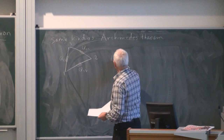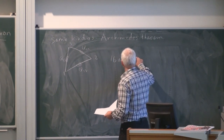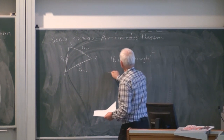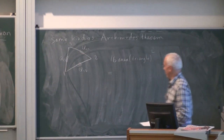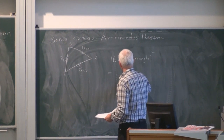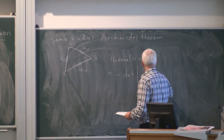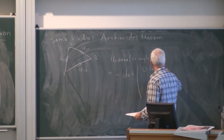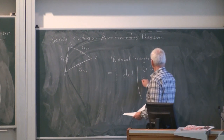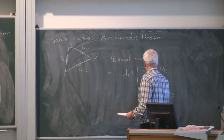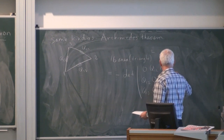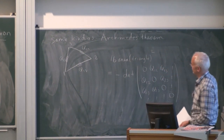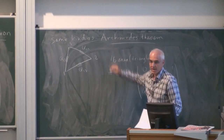then the formula is 16 times the area of the triangle squared. That can also be expressed as a determinant — minus the determinant of a matrix with entries 0s, Q₁₂, Q₁₃, Q₂₃, and a row of 1s. So this is an alternate form of Archimedes' theorem.